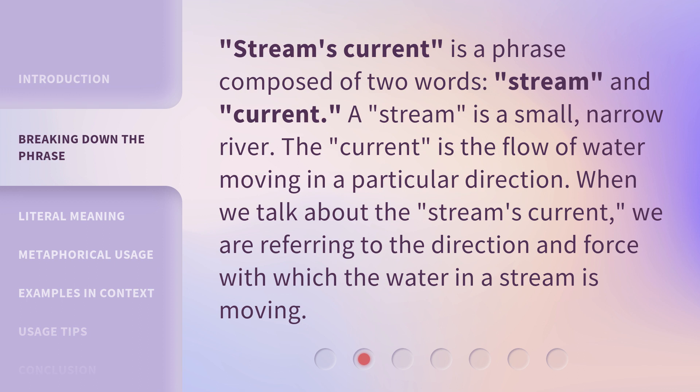Streams Current is a phrase composed of two words: stream and current. A stream is a small, narrow river. The current is the flow of water moving in a particular direction. When we talk about the stream's current, we are referring to the direction and force with which the water in a stream is moving.